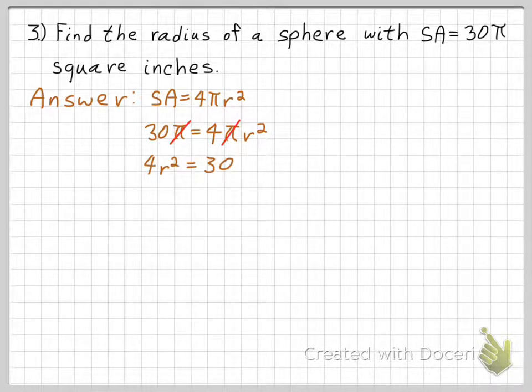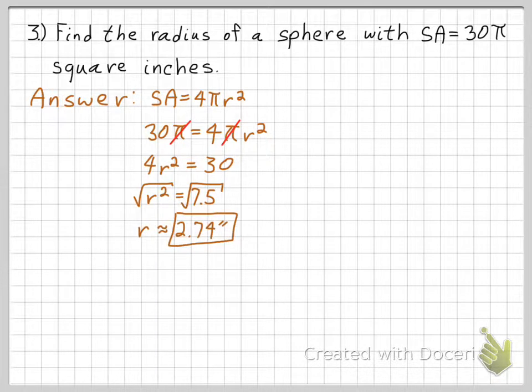And you get 4 r squared equals 30. I just commuted the 4 r squared with the 30. So 4 r squared equals 30. You can divide out the pi's. And then you divide both sides by 4. And you get r squared equals 7.5. Take the square root of both sides. And finally, you get that your radius is 2.74 inches. You'll also get problems like this as well. So that's the end of the lecture.